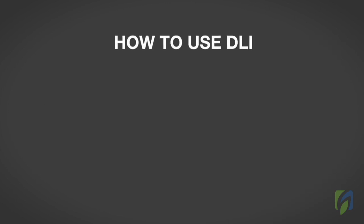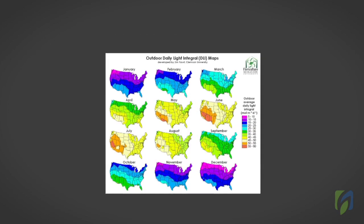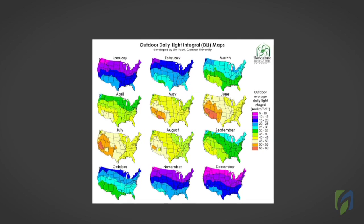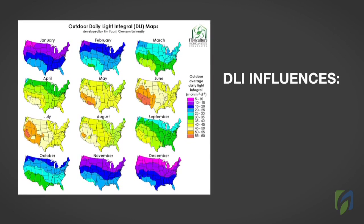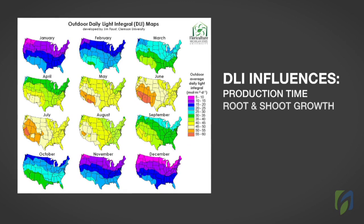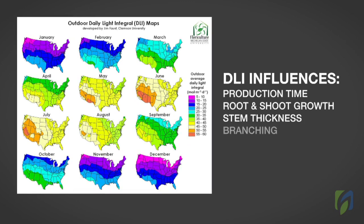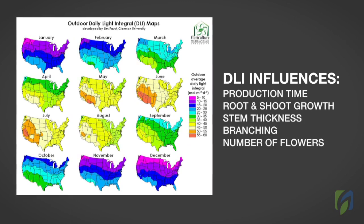How to use DLI. Purdue University has developed crop-specific daylight integral recommendations that are available online. Knowing the DLI is important because it influences production time, root and shoot growth of seedlings and vegetative cuttings, stem thickness, branching, number of flowers, and overall finish quality.